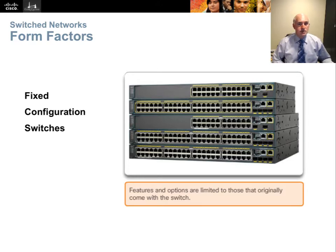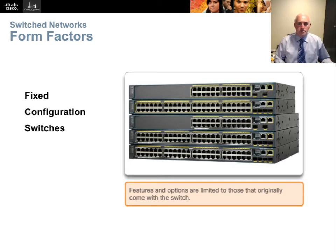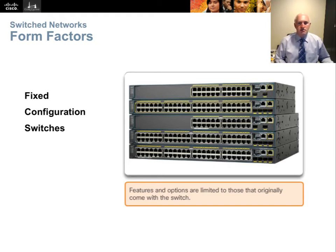Let's talk about the different form factors of LAN switches. You can purchase a LAN switch in a fixed configuration, like the ones shown here, where there's nothing to expand. These actually have a couple of SFP or small form factor ports — there's a small amount of expansion. The first and third switches have two SFP ports and the second and fourth have four. Those are ports without a transceiver module pre-installed, saving money while allowing you to add transceivers later. But it's still essentially a fixed configuration switch.